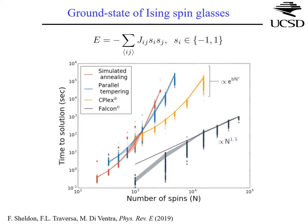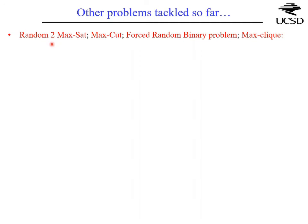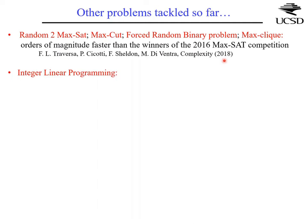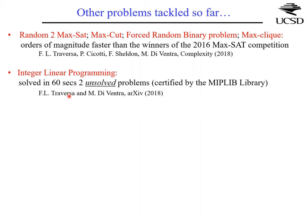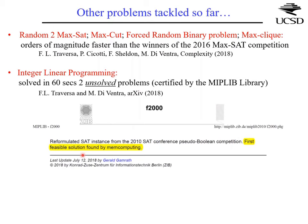We have done extensive benchmarks across many optimization problems — random 2-MAX-SAT, MAX-CUT, and others — done by a supercomputer center, not by us. We always find an advantage compared to even state-of-the-art competition solvers. We extended this to integer linear programming and solved in less than a minute two problems that had been unsolved for a decade; this was certified by the computer scientists maintaining the problem library.